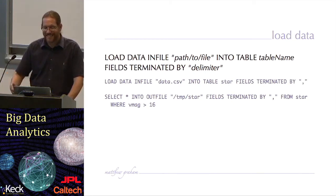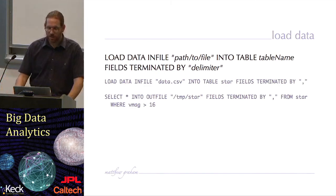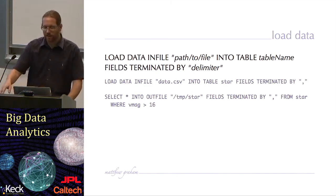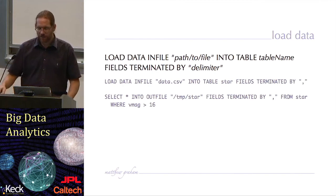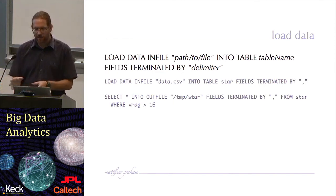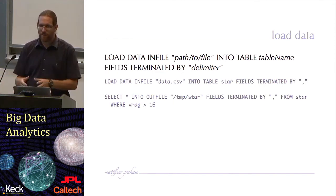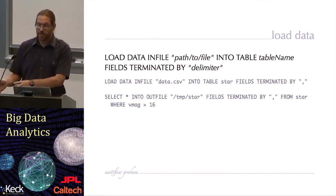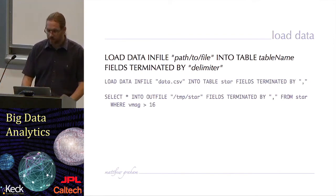Similarly, I can put data out — dump it onto a file on my hard drive. For example, select star into outfile with fields terminated by commas from star where V magnitude is greater than 16. That will select everything from the table star where V magnitude is greater than 16 and write it into a comma-separated variable file.